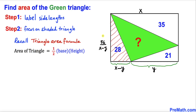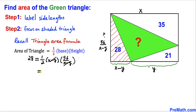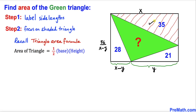To verify: plugging in, 28 equals one-half times (x minus y) times 56/(x minus y). The (x minus y) terms cancel, and 56 divided by 2 is 28, which equals the left-hand side — so this is indeed a true statement.